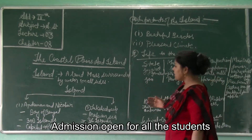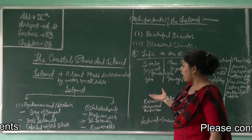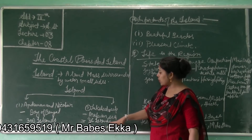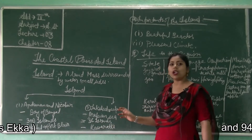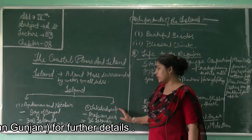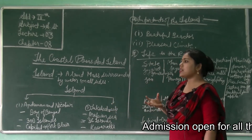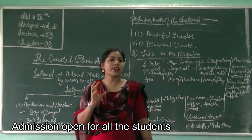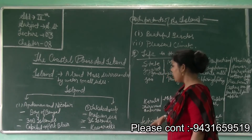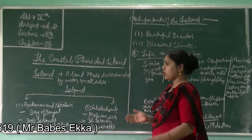The second island group is Lakshadweep, which lies in the Arabian Sea. It is made up of 36 islands. It is a smaller Union Territory and its capital is Kavaratti. It is formed by coral, which is a marine animal that deposits its skeleton to form coral reefs. That is why most of the islands are found in Lakshadweep.